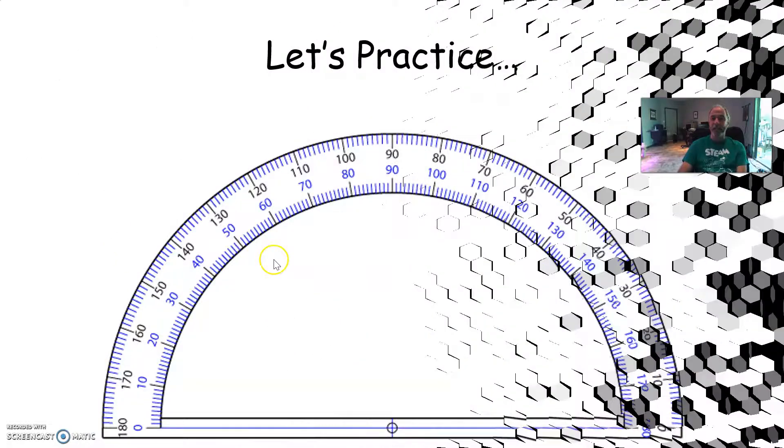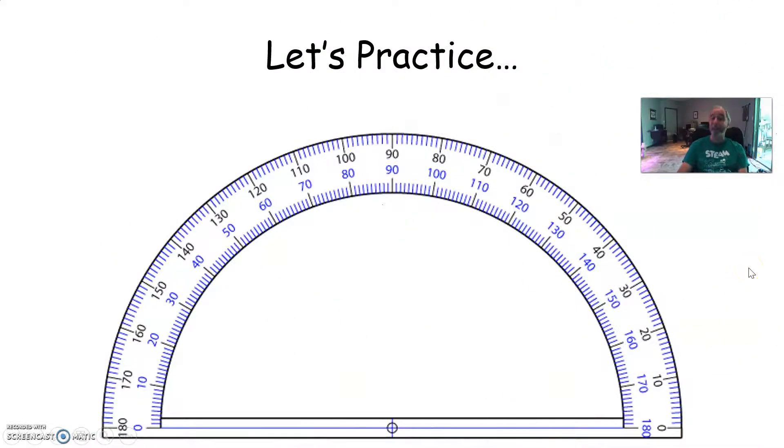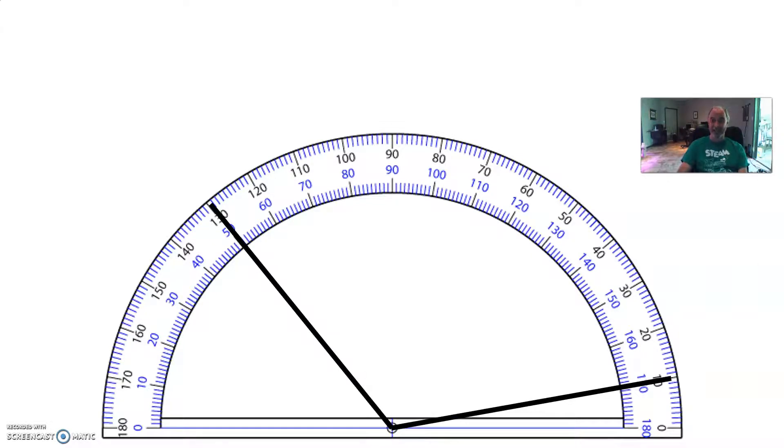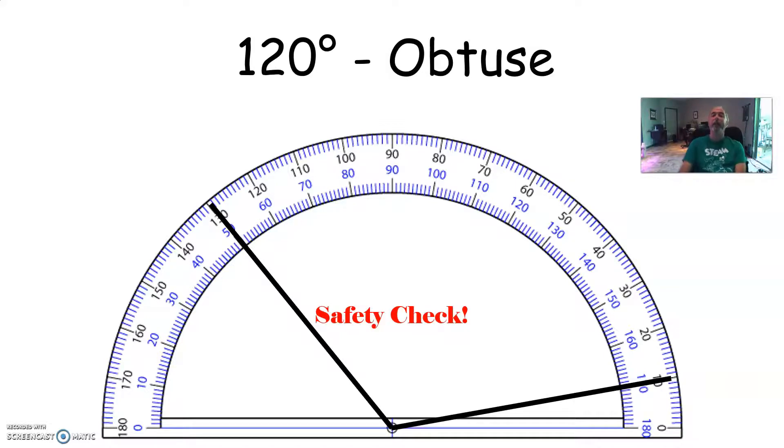All right. So you ready? Let's practice. Here you go. Hit pause. Do the math. Show your work. And go. Hit pause. All right. I'm assuming we're unpaused now. This one is starting on the 10. Over here, we're at 130 using the black, the top row of numbers. So 130 minus 10 is 120. 120 degrees. Safety check. Is this acute or obtuse? That's right. It is obtuse. So we pass our safety check. It is 120 degrees.